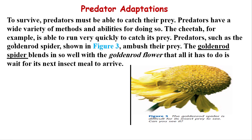To survive, predators must be able to catch their prey because they need energy to survive. Every living thing needs energy, so predators are going to eat prey. Predators have a wide variety of methods and abilities — for example, the cheetah is able to run very quickly to catch its prey, such as a deer. The goldenrod spider blends in so well with the goldenrod flower that it just has to wait for the next insect meal.